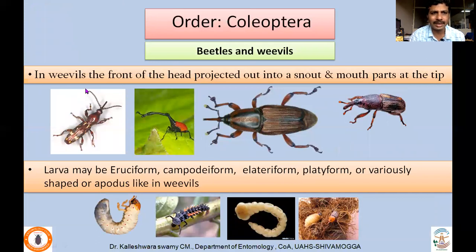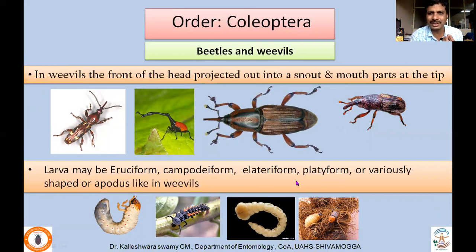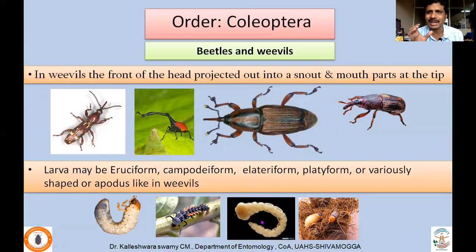In case of weevils, Coleoptera includes both beetles and weevils. The front of the head is projected out into a snout — you come across common weevils, especially in rice — and mouthparts are found at the tip. Larvae of these beetles may be eruciform, campodeiform, elateriform, or platyform. They are adapted to a variety of habitats, and as a result their body structure also varies depending on the place or feeding habit.